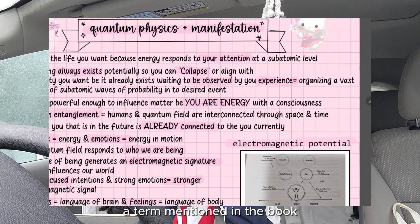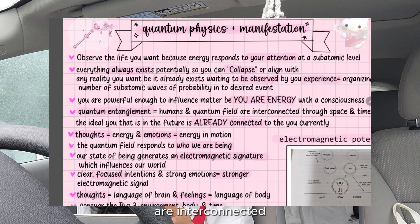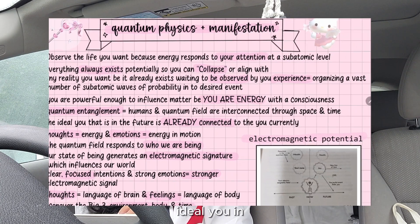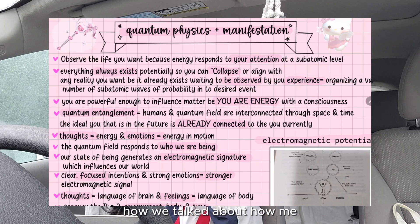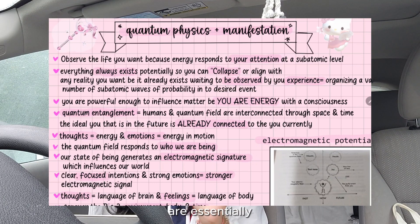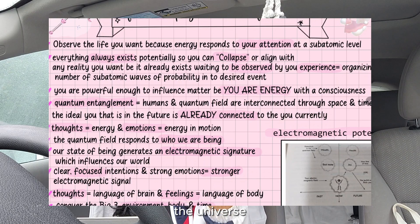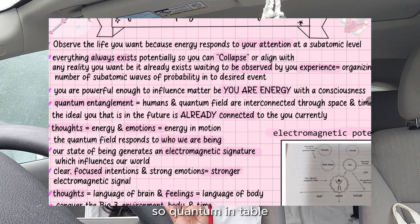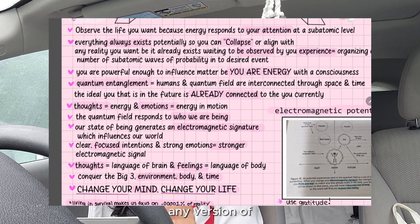There's also a term in the book called quantum entanglement, which means how humans and quantum fields are interconnected through space and time. The ideal version of you in the future is already connected to you right now. We know spiritually that we and the universe are essentially all one — and science talks about that here too. Quantum entanglement also affirms that time isn't real, and the future you is already connected to the version of you right now. You have access to any version of yourself right now.